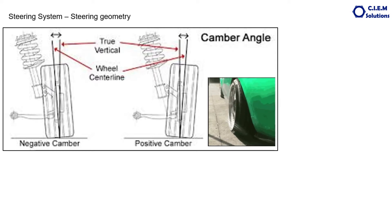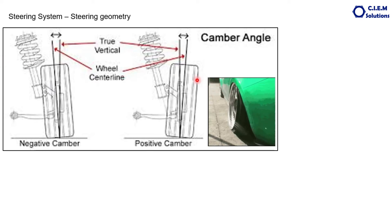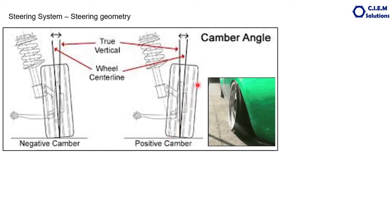The first one is the camber angle. What is meant by the camber angle? If you see a vehicle from the front, you can observe that the tyres are leaned outwards or inwards. If you draw a vertical perpendicular line from the ground and also a line with respect to the tyre width from the zero point, whatever angle is there between them is called the camber angle.